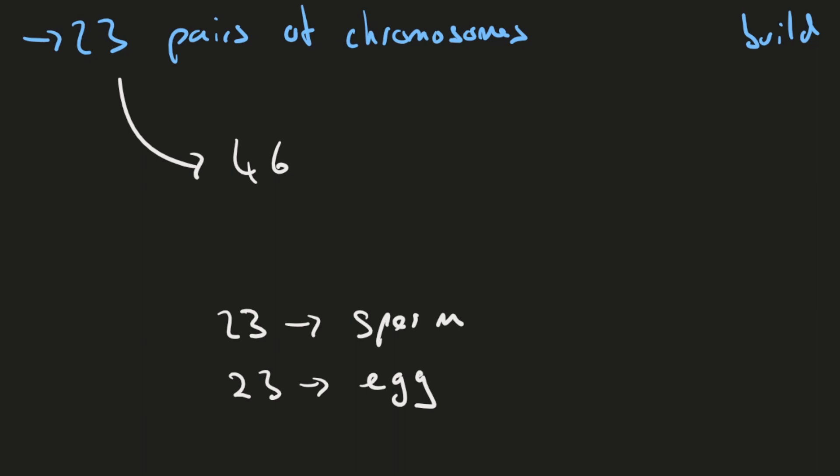That's true for body cells. The difference is you do have sperm cells and egg cells within your body — they're not referred to as body cells though; these are called gametes. The important thing to remember is that gametes have 23 chromosomes, whereas a normal body cell — any cell that's not a gamete — will have 46 chromosomes, or 23 pairs.